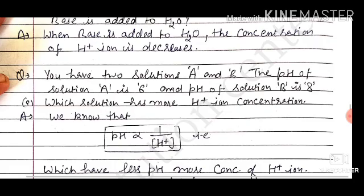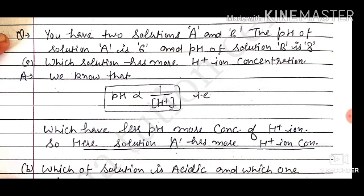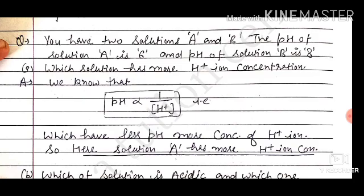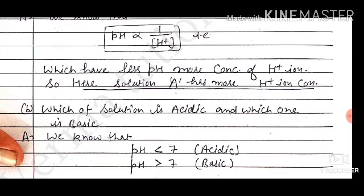These are very important questions for 1-mark answers. Consider two solutions A and B: the pH of solution A is 6 and the pH of solution B is 8. Which solution has more H-ion concentration? The lower the pH, the higher the H-ion concentration. Hence, solution A has more H-ion concentration.